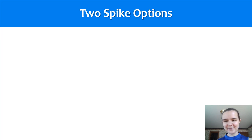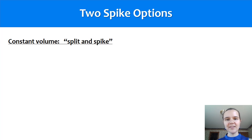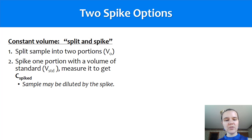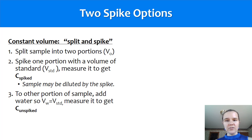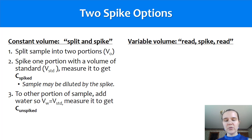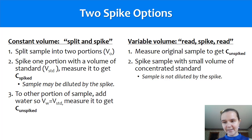There are two spike options. The first is what I'll term the constant volume, or the split and spike. You split your sample into two portions, and then one of those portions is spiked with a certain amount of your standard — you'll call that concentration C spiked. You add the same amount of water or solvent to the other portion so they're both diluted the same. One gets the spike, one gets something neutral like water — that concentration is C unspiked. In contrast, the variable volume approach — the read, spike, and read — has you measure the original sample straight up to get C unspiked, then spike it with a small volume of concentrated standard, and measure again to get C spiked.